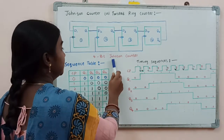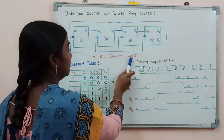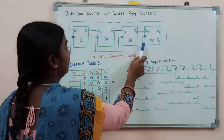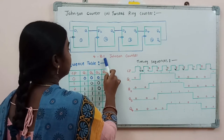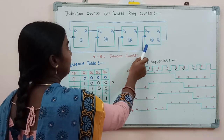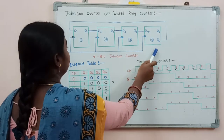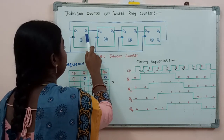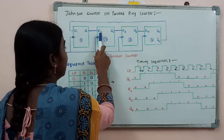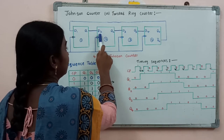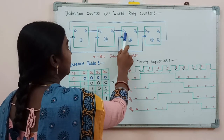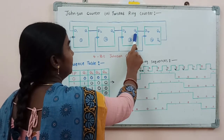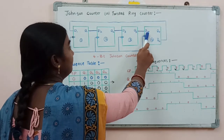Here is the logic diagram of a 4-bit Johnson counter. In this, we are going to use D-type flip-flops. We are considering 4 binary bits, meaning we have to use 4 D-type flip-flops. The first flip-flop output is given as input to the second flip-flop. In the same way, the second flip-flop output is given to the input of the third, and the third flip-flop output is given to the input of the fourth flip-flop.